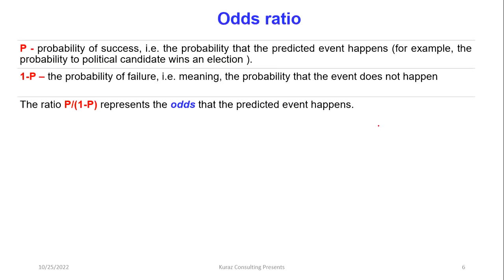Regarding odds and the odds ratio: P represents the probability of success, that is the probability that the predicted event happens — for example, the probability that a political candidate wins an election. P minus 1 is the probability of failure, meaning the probability that the event does not happen. So the ratio P divided by 1 minus P represents the odds that the predicted event happens.